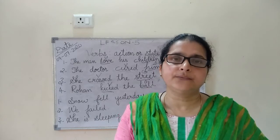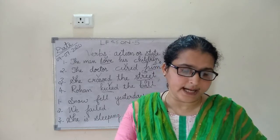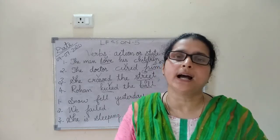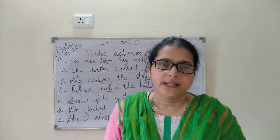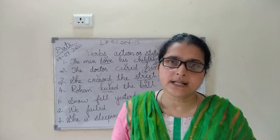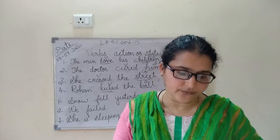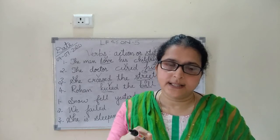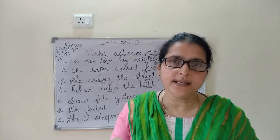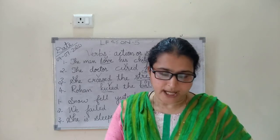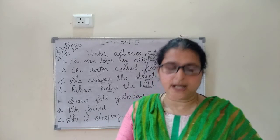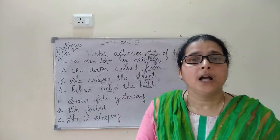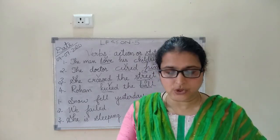The fourth example: The tiger is the national animal of India. Which is the verb here? In this sentence, is is the verb. And the national animal of India is the complement.